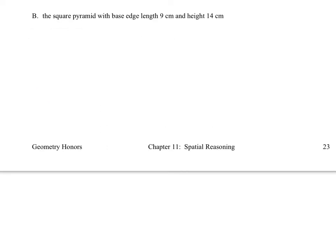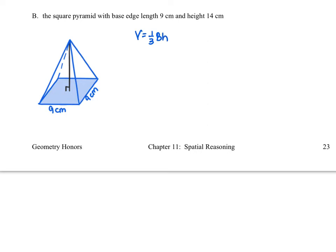In question B we're working with a square pyramid with a base edge length of 9 centimeters and a height of 14 centimeters. I'll draw a diagram. The formula is V equals one-third uppercase B times H, and since we have a square base, uppercase B is side squared. Plugging in, we have one-third times 9 centimeters squared times 14 centimeters, giving us a total volume of 378 cubic centimeters.